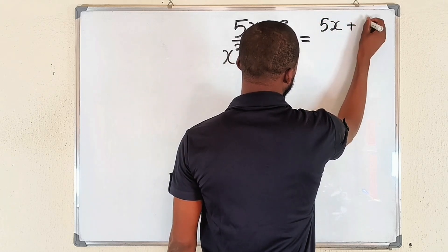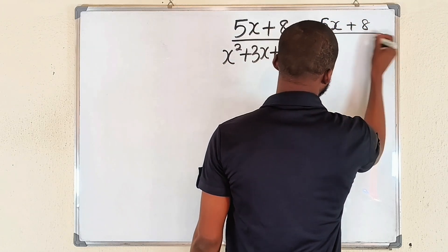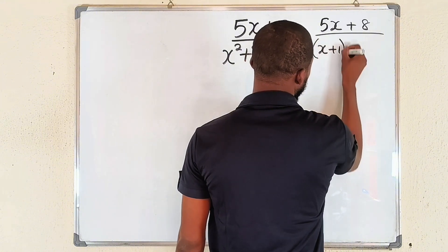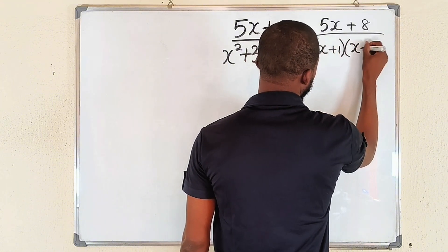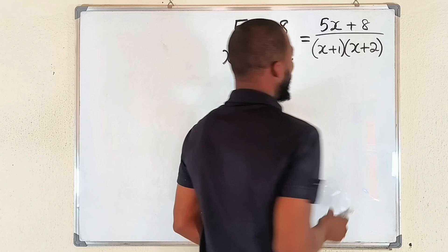5x plus 8 divided by (x+1) multiplied by (x+2). Before I show you how to apply the cover-up method, let me tell you when to use it.